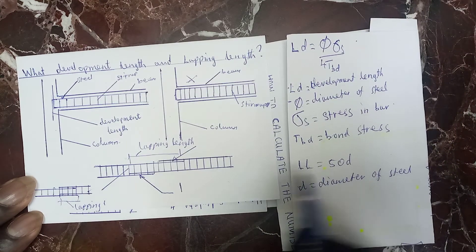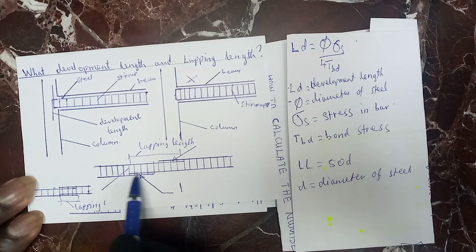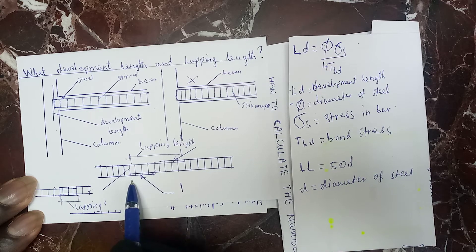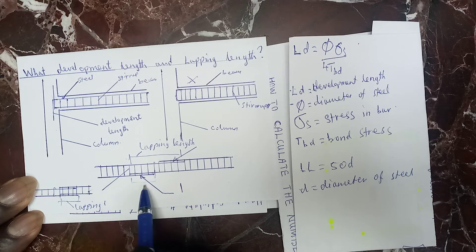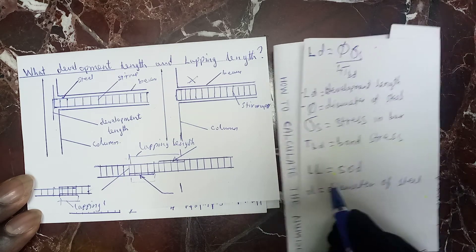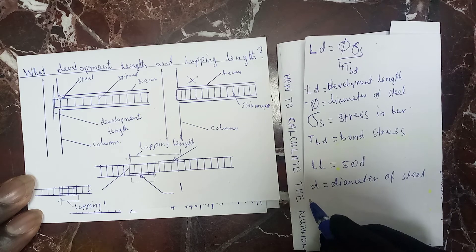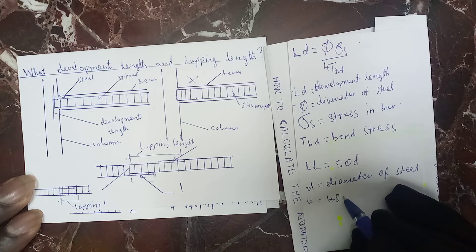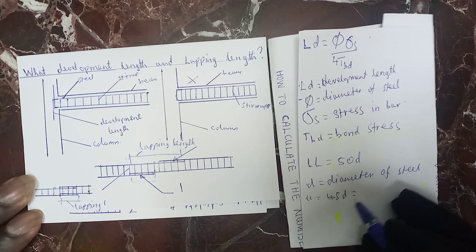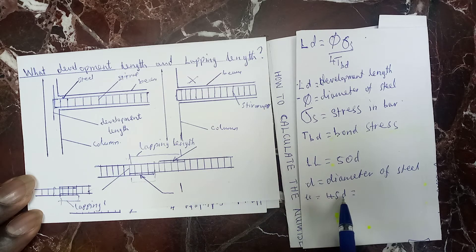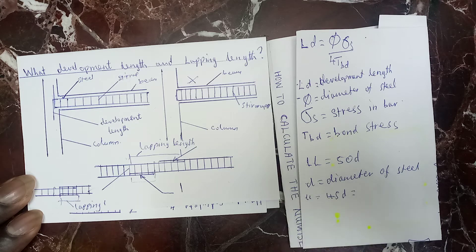The formula for lapping length is 50D, or 45D can also work — LL equal to 45D is also good — where D stands for the diameter of steel.